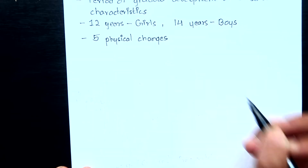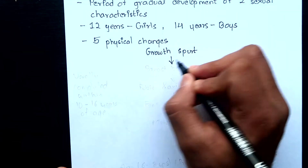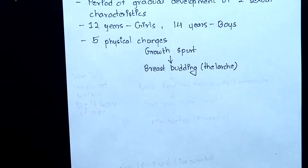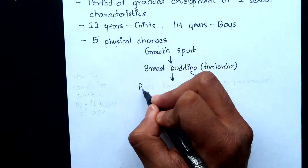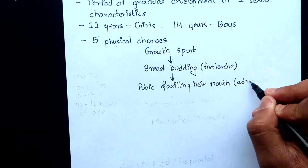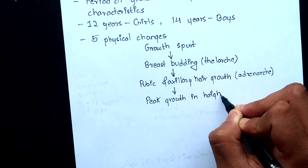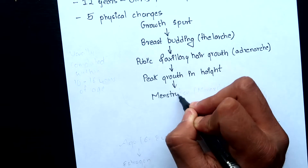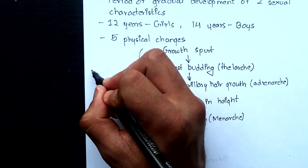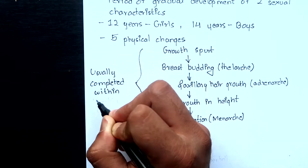The most common order is beginning of growth spurt, followed by breast budding also known as thelarche, followed by pubic and axillary hair growth or adrenarche, peak growth in height, and menstruation — that is, menarche. All these changes are usually completed between the age of 10 and 16 years.